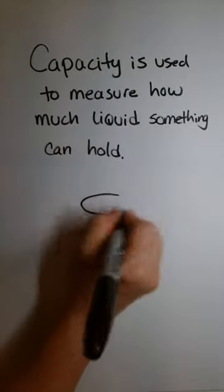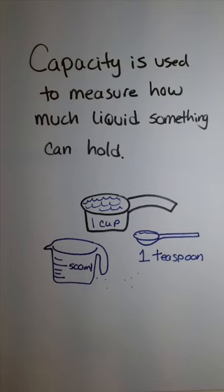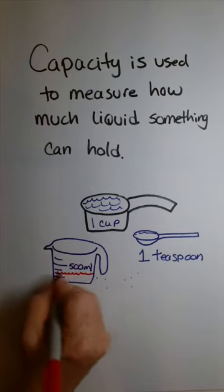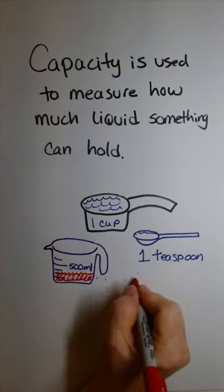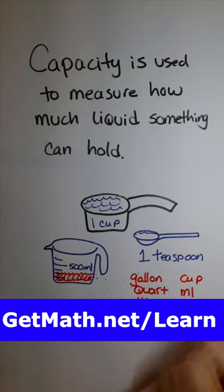You use this in the kitchen all the time. We measure capacity in a lot of different ways, everything from gallons, quarts, and liters to cups, ounces, milliliters, and more. For more math lessons like this, join me at getmath.net/learn.